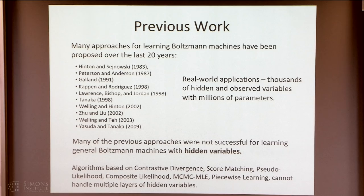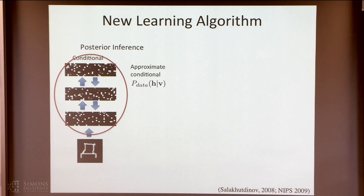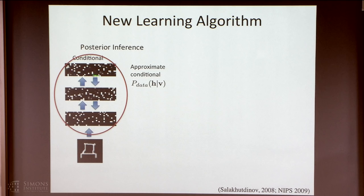Let me give you an intuition of what we're trying to do here. This is true not just of a Boltzmann machine, but any type of Markov random field where you have complicated relationships between hidden variables. The first thing you need to do is infer the distribution of hidden variables — you need to approximate the posterior distribution of the states of these variables given the data. On the other hand, you can also simulate from the model.